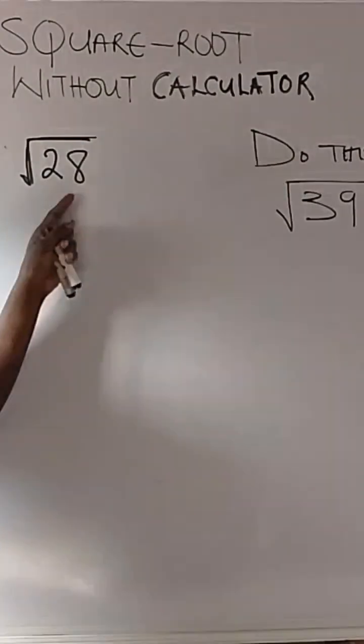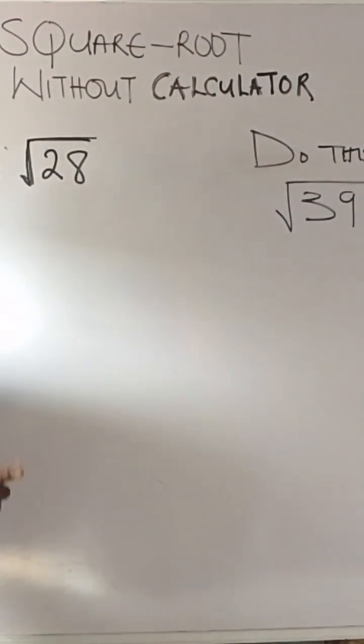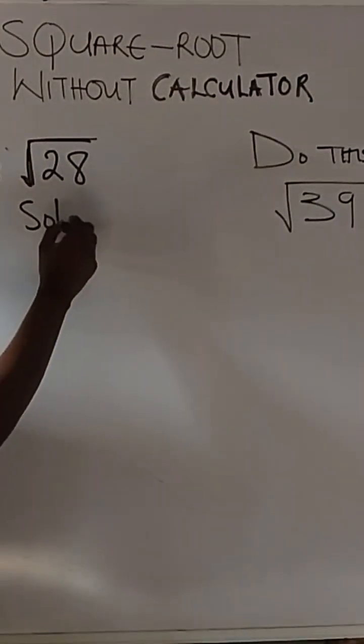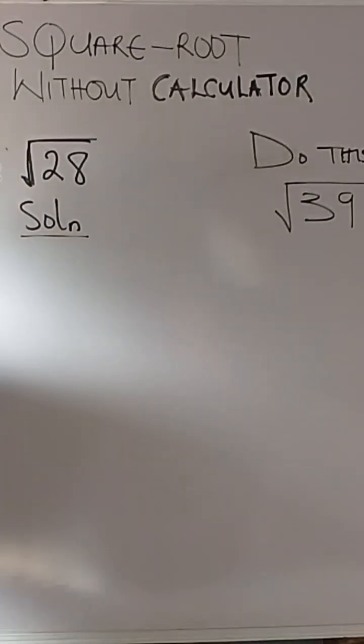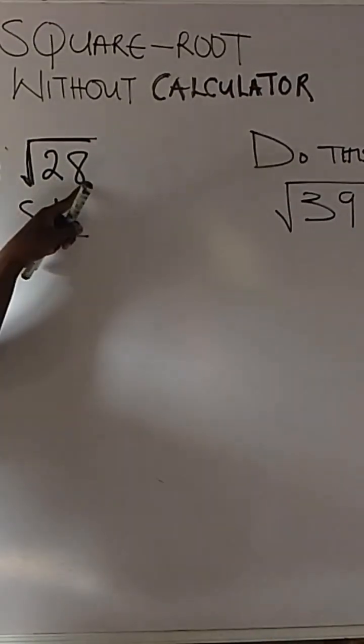I'm going to show you how to get the square root of numbers without using a calculator, most especially square root of non-perfect squares. All you have to do is simply do this: break 28 into two numbers.